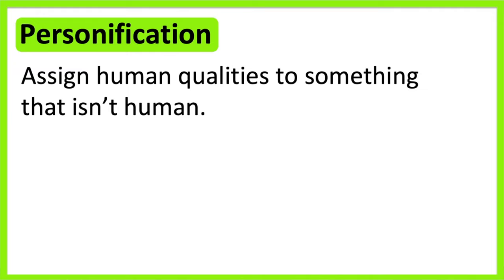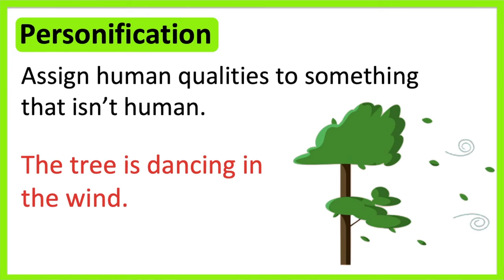For example, the tree is dancing in the wind. We know that trees don't have the human quality of dancing. However, this language technique makes the sentence more interesting and creates an image in the reader's mind. It sounds more interesting than just saying: the tree is moving in the wind.